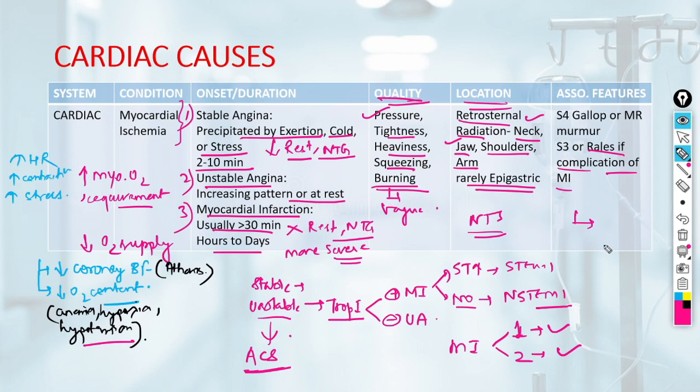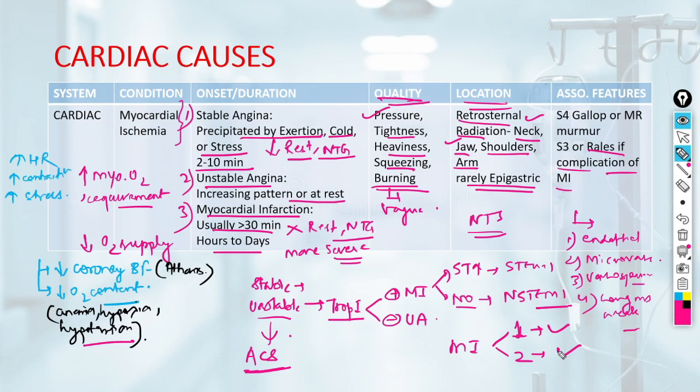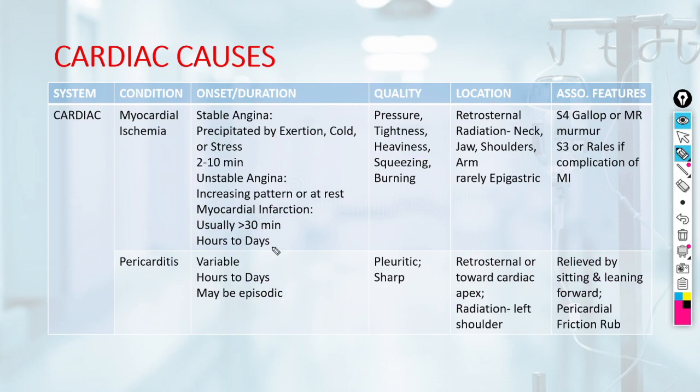Other causes of myocardial ischemic pain include endothelial dysfunction, microvascular diseases, vasospasm (known as vasospastic angina), congenital muscle weakness, or increased demand due to aortic wall disease or hypertrophic obstructive cardiomyopathy.